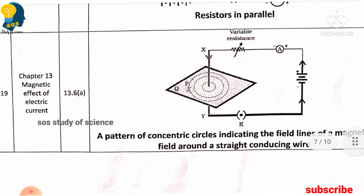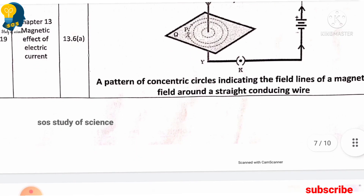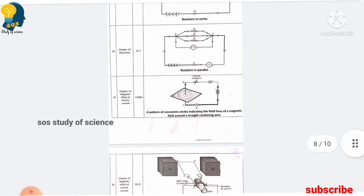Moving to the next diagram: a pattern of concentric circles indicating the field lines of a magnetic field around a straight conducting wire. This is from the lesson magnetic effects of electric current and you must learn this.